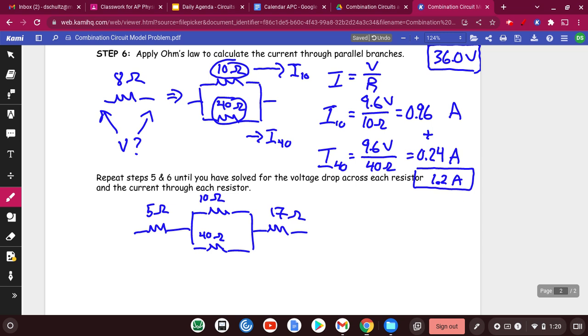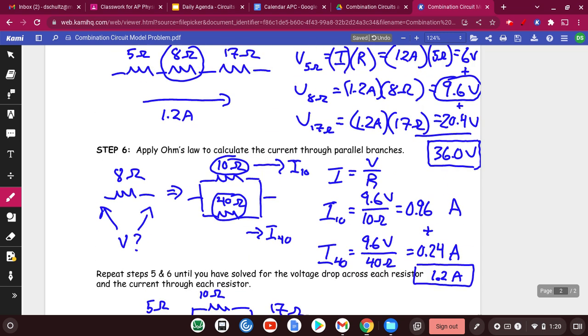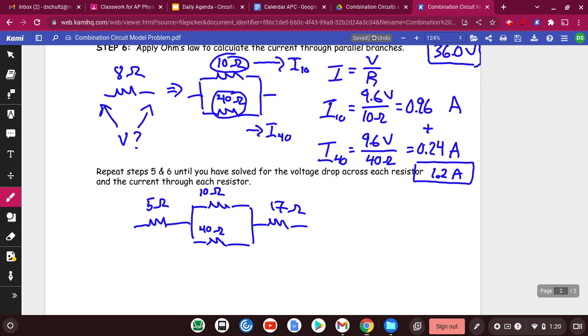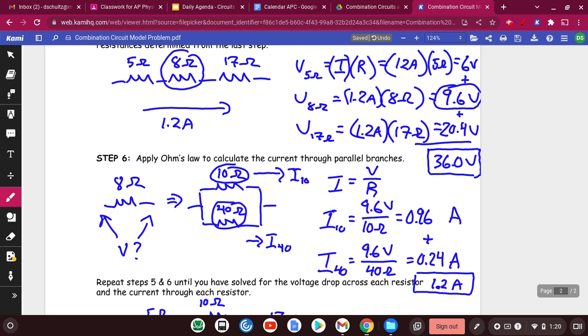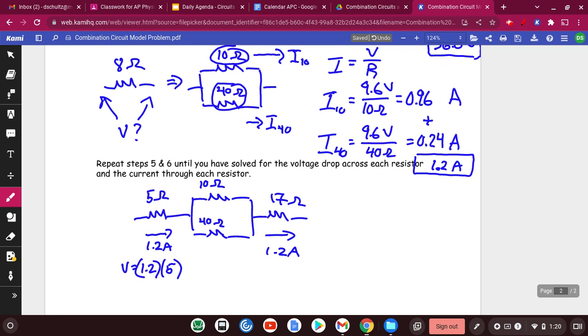So what we haven't done is we haven't figured out the voltage drops across the 5 and the 17. So we know that this thing gets 1.2 amps. We know that this thing gets 1.2 amps, because they have to. And so to find the voltages across those, we do 1.2 times 5. And I guess we did do this already, didn't we? And then we had this voltage is 1.2 times 17. Yeah, we did do that.